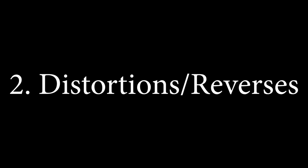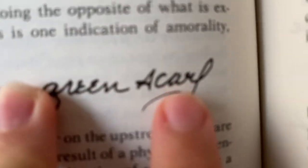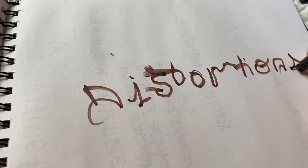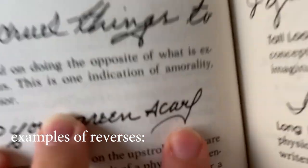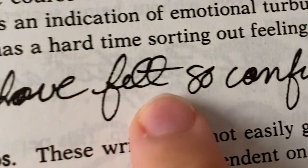Step two, I look for distortions or reverses. Distortions really jump out on the page because they're very different from how you were taught to write. They can be distorted shapes, unexplained twisting, or broken forms — I'll show some pictures of examples. Broken forms indicate emotional distortions. Reverses can indicate a rebellious quality but can also indicate dishonesty. Tangles indicate emotional turbulence.